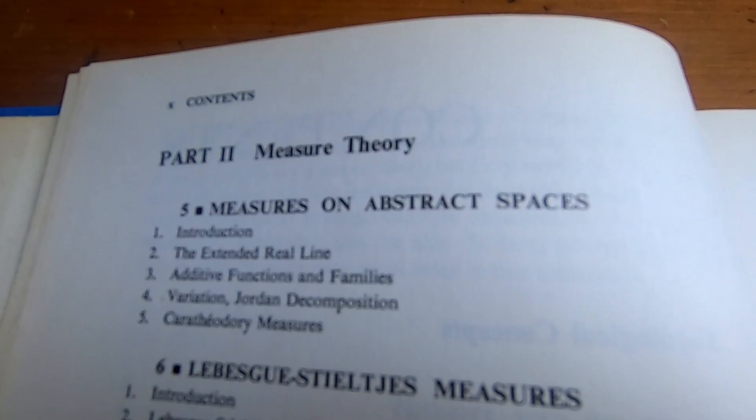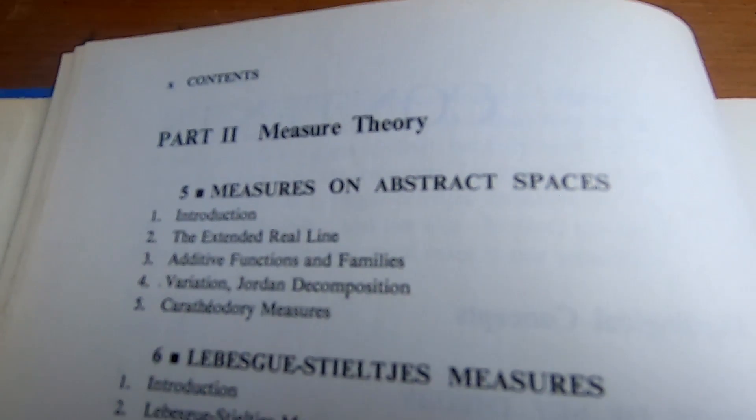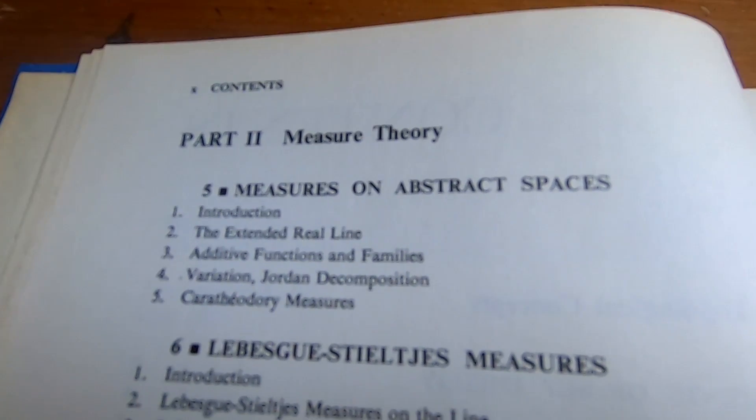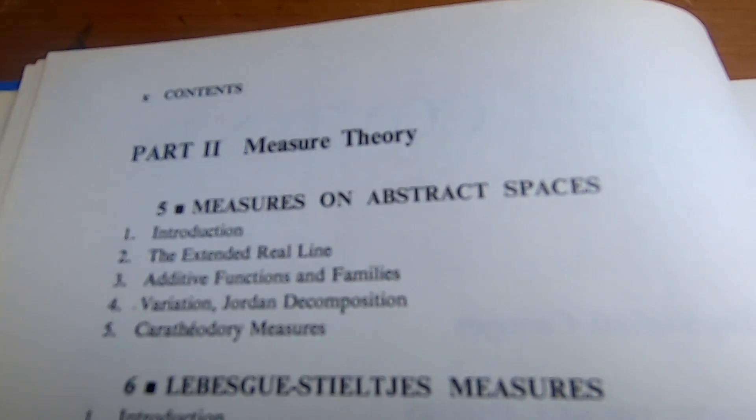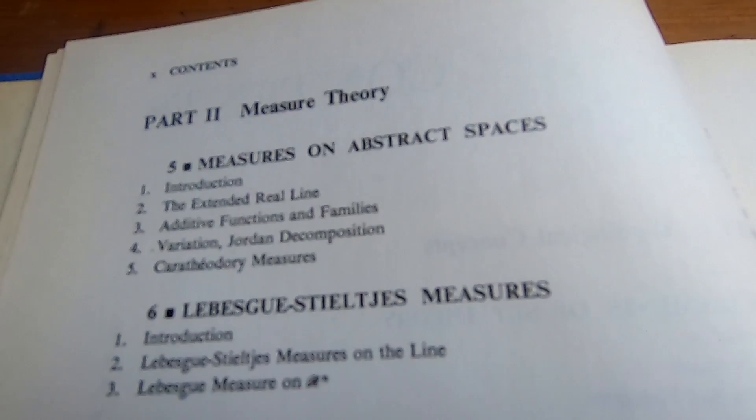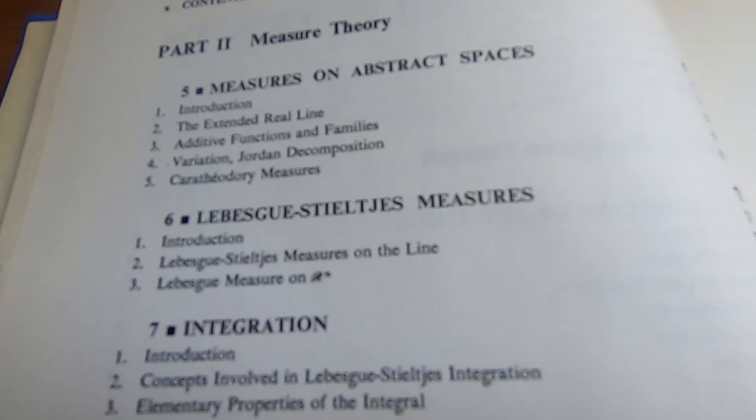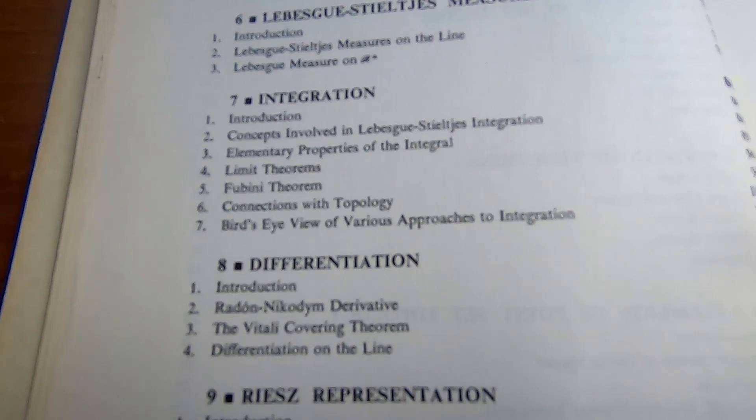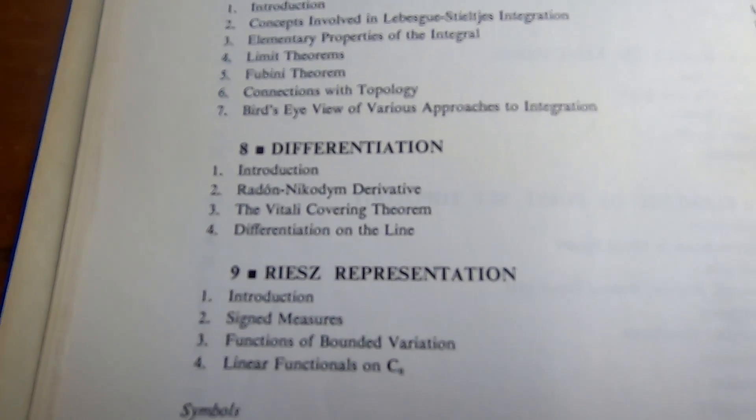Then we enter part two of the book. Part two is on measure theory. So this is considered graduate level analysis for sure. It talks about the extended real line, variation, the Lebesgue measure, integration, differentiation, and more stuff here. Even sign measures at the end.